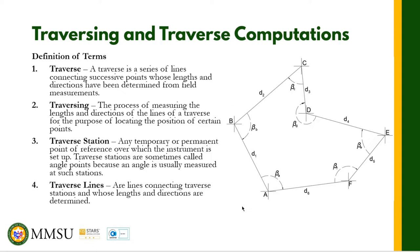Traversing is the process of measuring the lengths and directions of the lines of a traverse for the purpose of locating the position of a certain point — that's the actual doing of the traverse. Traverse stations are any temporary or permanent point of reference over which the instrument is set up. Traverse stations are sometimes called angle points because an angle is usually measured at such stations. Traverse lines are lines connecting traverse stations whose lengths and directions are determined. For example, in our figure we have lines AB, BC, CD, DE, EF, and FA — these are called traverse lines, and if we connect them together as a whole, we call it a traverse.